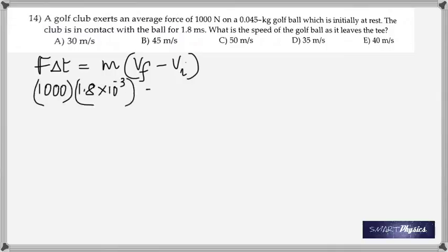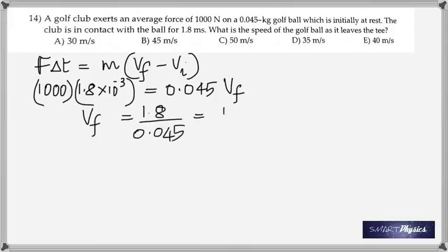Here, the force applied and the mass of the ball are given. Time of contact is also given. All I've done is use the two equations for impulse - put them together and find the final velocity. Those are the two equations for impulse: one is the product of force and time, the other is change in momentum.